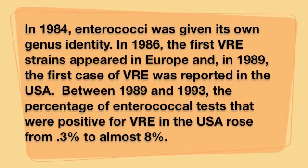In 1984, Enterococci was given its own genus identity. In 1986, the first VRE strains appeared in Europe, and in 1989, the first case of VRE was reported in the USA. Between 1989 and 1993, the percentage of Enterococcal tests that were positive for VRE in the USA rose from 0.3% to almost 8%.